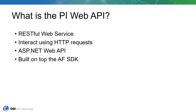So what is the PI Web API? PI Web API is a RESTful web service that provides programmatic access to the PI system via HTTP requests. It's an ASP.NET Web API, and the underlying data access is provided by the AF SDK.